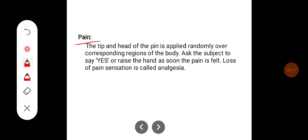To test pain, the tip of the pin is applied randomly over the corresponding regions of the body and the subject is asked to say 'yes' or raise their hand as soon as pain is felt. The loss of pain sensation is called analgesia. Pain sensation has to be tested in corresponding dermatomal areas.